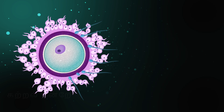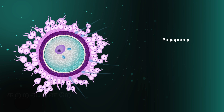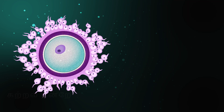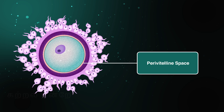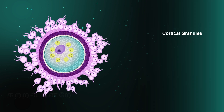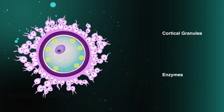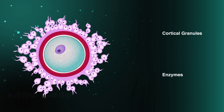This process protects the ovum from polyspermy — the entry of multiple sperm cells — which could lead to abnormal chromosomal sets and developmental defects. The region between the zona pellucida and the vitelline membrane is called the paravitelline space. To prevent polyspermy, cortical granules released by the ovum release enzymes into the paravitelline space that harden the zona pellucida, forming a protective barrier.